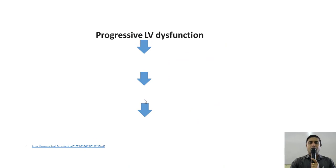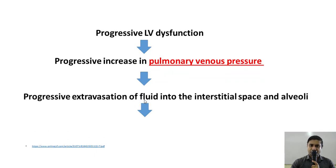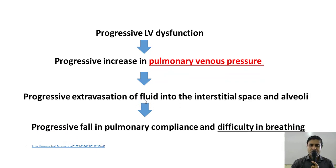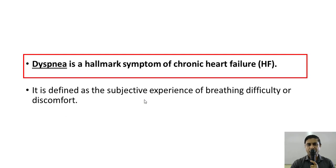Progressive left ventricular dysfunction leads to a progressive increase in pulmonary venous pressure, causing progressive extravasation of fluid into the interstitial space and alveoli, resulting in a progressive fall in pulmonary compliance and breathing difficulty. It may come as a surprise to the beginner, but the hallmark symptom of chronic heart failure is a respiratory symptom — it is dyspnea, defined as a subjective experience of breathing difficulty or discomfort.